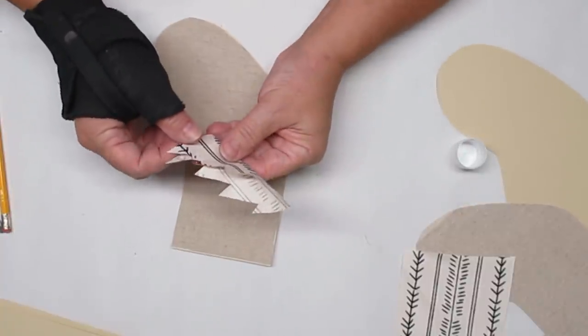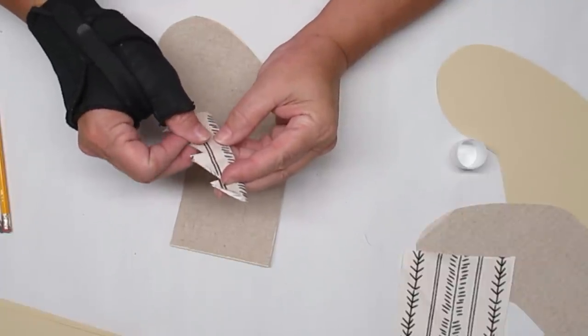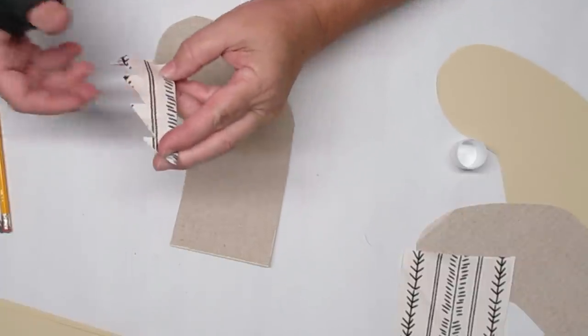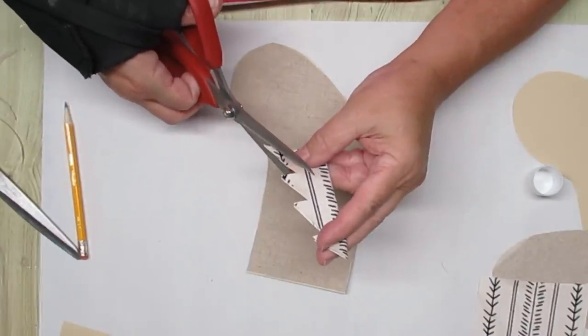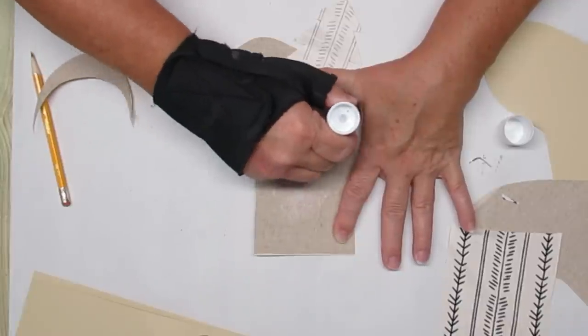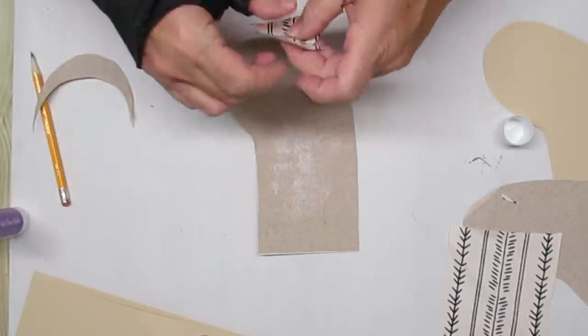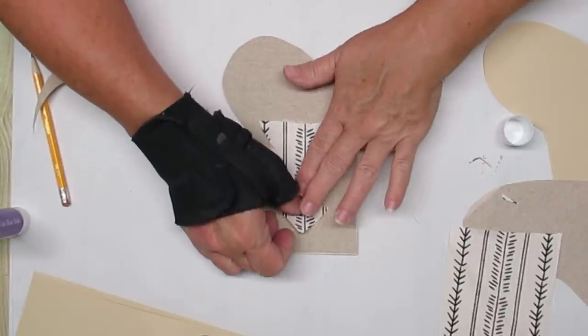Placing my Christmas tree on the stocking, I'm noticing that the bottom part of the tree is a little too wide. So I'm just going to fold it in half one more time and just trim a little bit off that angle at the bottom. Using the glue stick one more time, I'm going to apply a generous amount to the linen fabric and then put my Christmas tree design right on top.